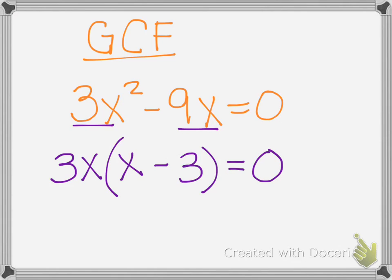Just like before with difference of two squares, you have two terms being multiplied by one another. So what makes this equal to 0? For this term we're going to have x equals 0, and for over here, x equals 3. So those are our two solutions.